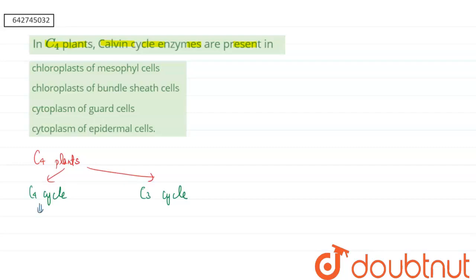If we are talking about C4 cycle, then C4 cycle will occur in the mesophyll cells of the plant. Here the chloroplast of the mesophyll cell will show the C4 cycle. These mesophylls are granular in nature, that means they will have grana which will show the light reaction.